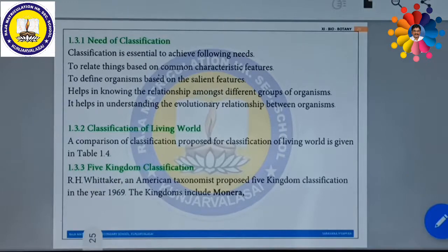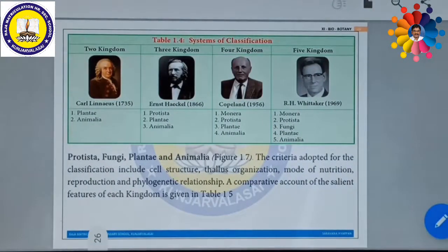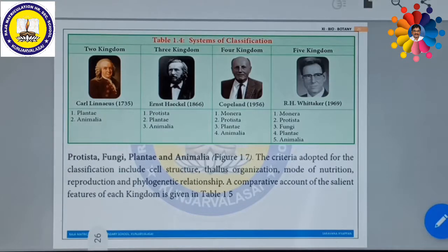R. H. Whittaker, an American taxonomist, proposed five kingdom classification in the year 1969. The kingdoms include Monera, Protista, Fungi, Plantae, and Animalia. The criteria adapted for the classification include cell structure, thallus organization, mode of nutrition, reproduction, and phylogenetic relationship. On the basis of these criteria, these organisms are classified.